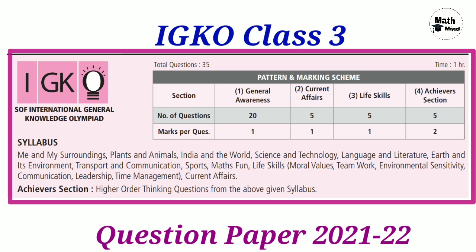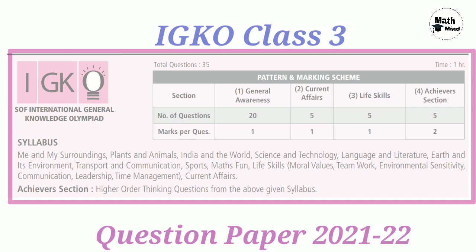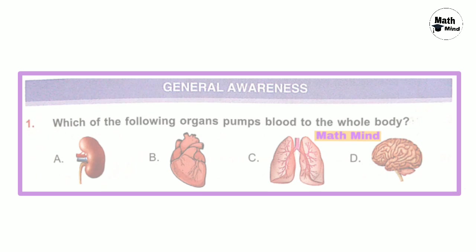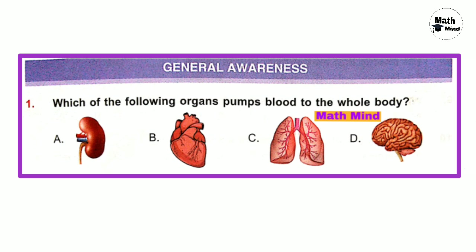This is the marking scheme and syllabus — please take a screenshot. General Awareness, Question number 1: Which of the following organs pumps blood to the whole body? Options are: kidney, heart, lungs, and brain.